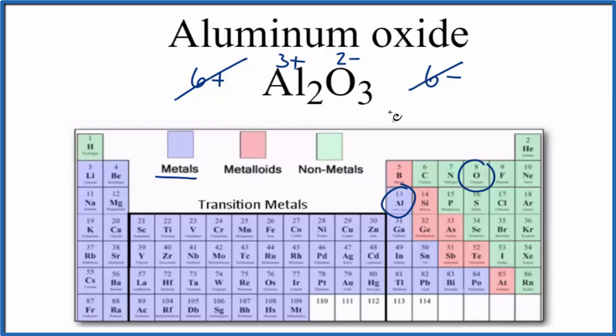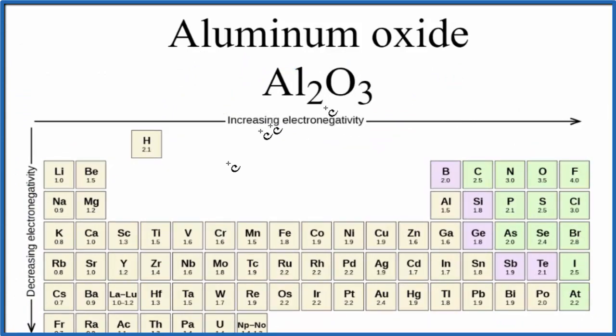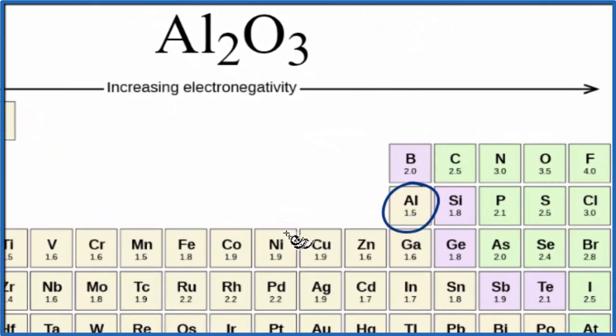Let's quickly just look at the difference in electronegativity between the aluminum and the oxygen. So for this periodic table, we find aluminum right here. It's 1.5. And then oxygen, that is 3.5. So the difference between these two, 3.5 minus 1.5, that's 2.0.